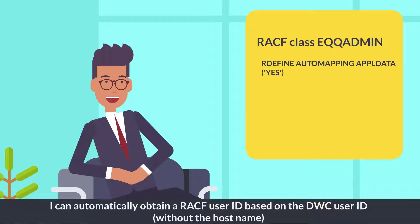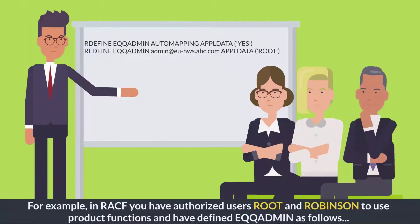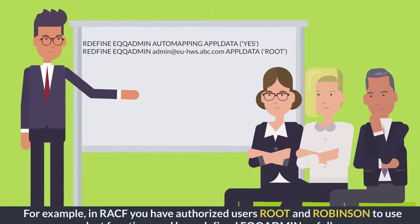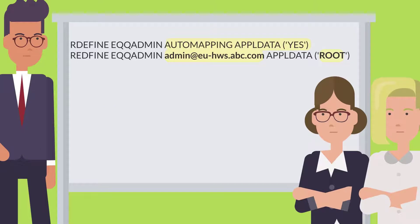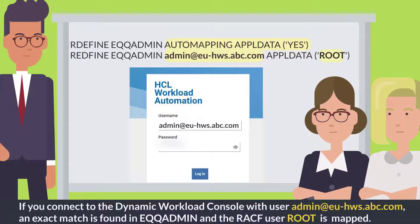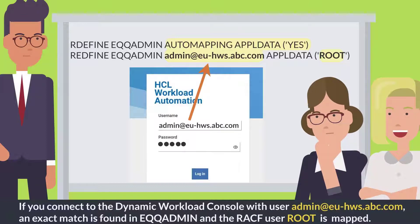For example, in RACF, if you have authorized users Route and Robinson, and have defined EQQADMIN as follows — if you connect to the Dynamic Workload Console with a matching user, the corresponding RACF user is mapped.